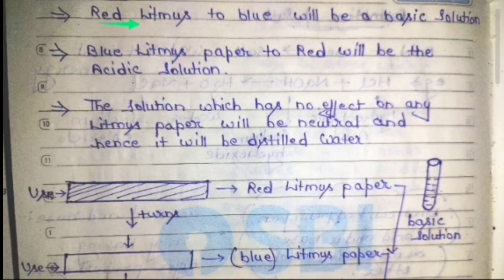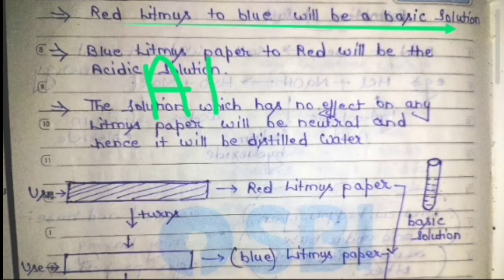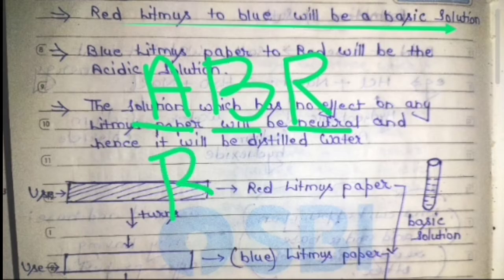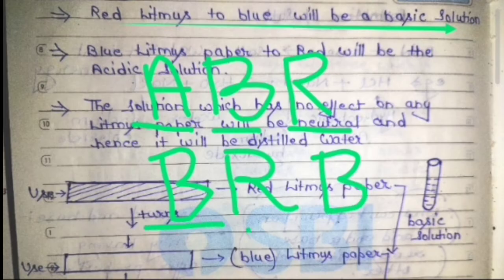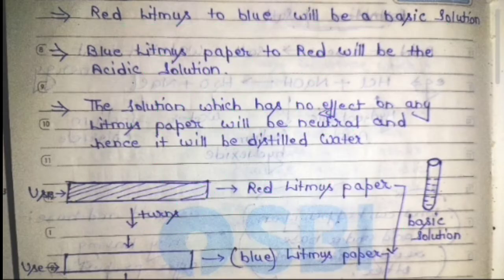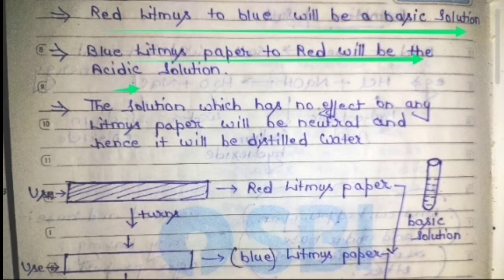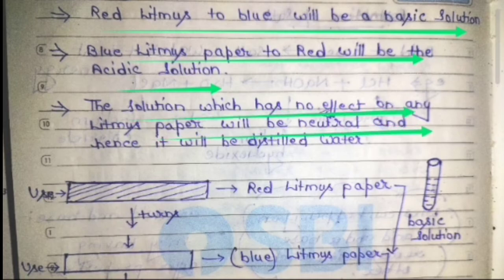As you already know, red litmus paper turns blue in a basic solution, and blue litmus paper turns red in an acidic solution — Acid: Blue to Red; Base: Red to Blue. The solution which has no effect on any litmus paper will be neutral — for example, distilled water and cane sugar.